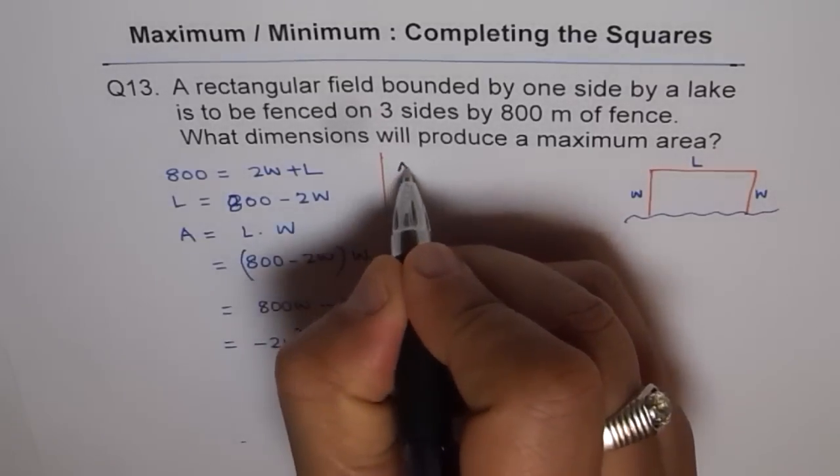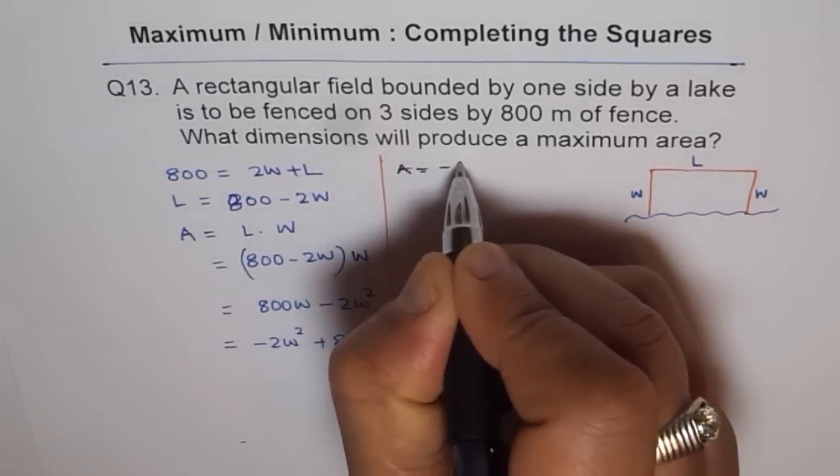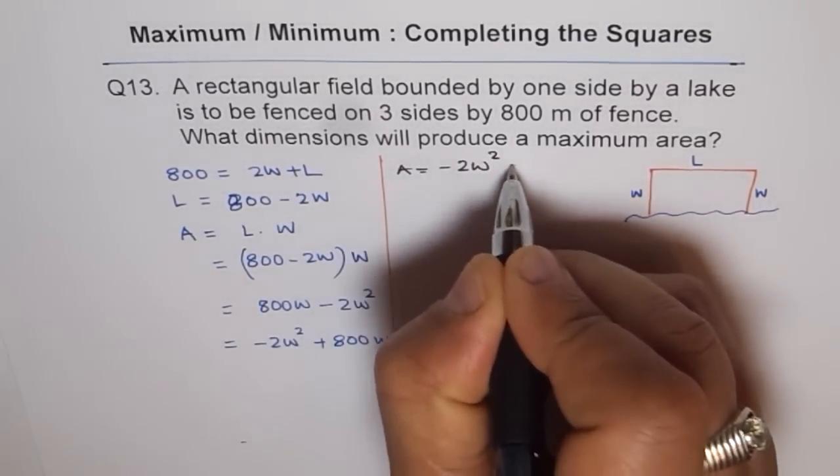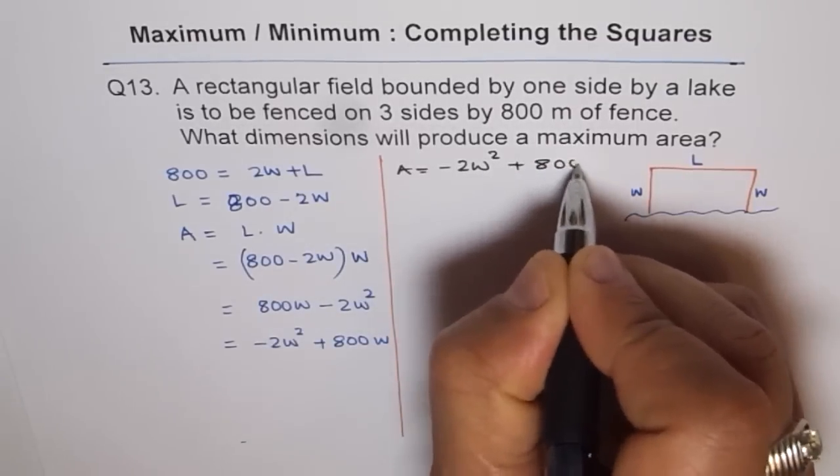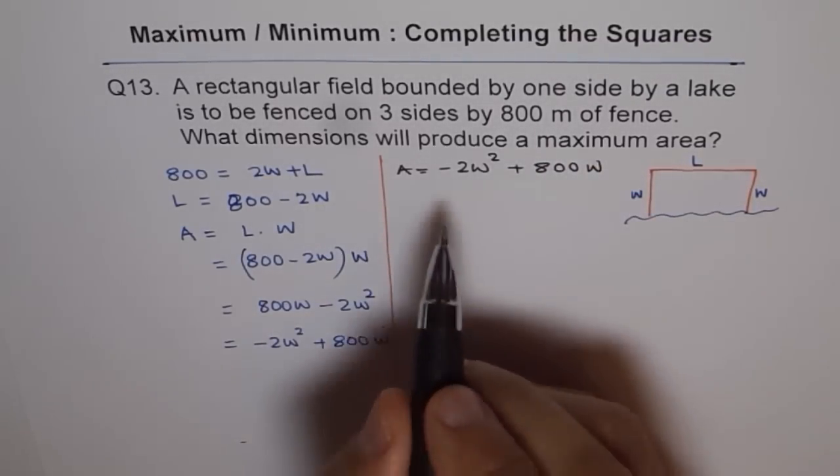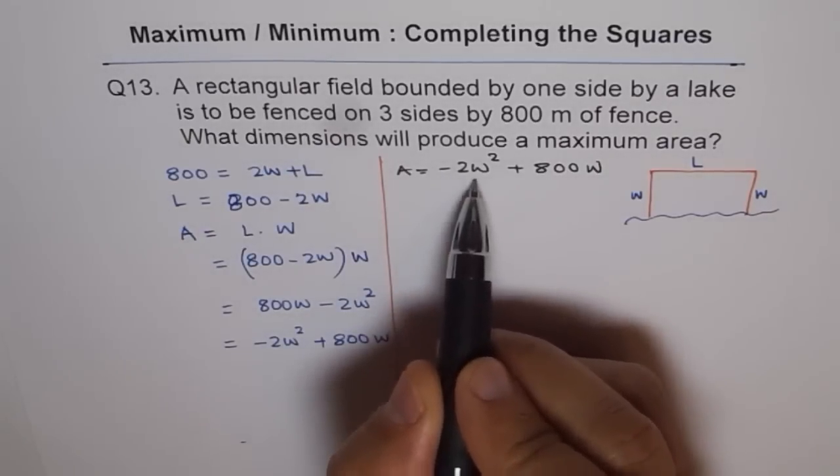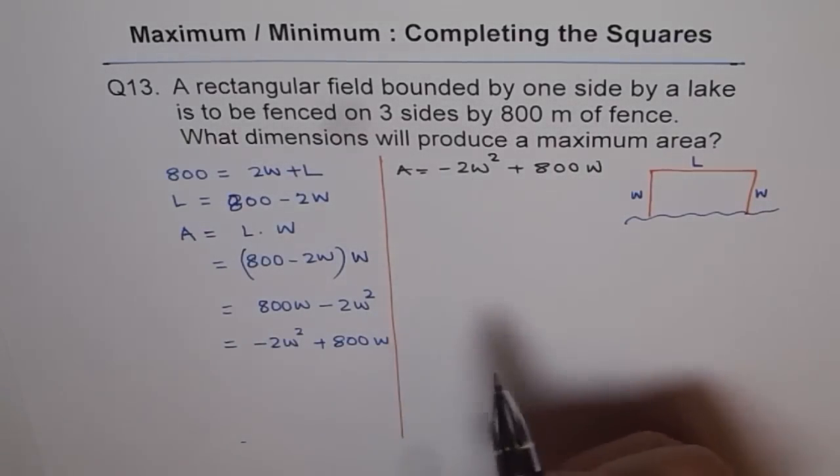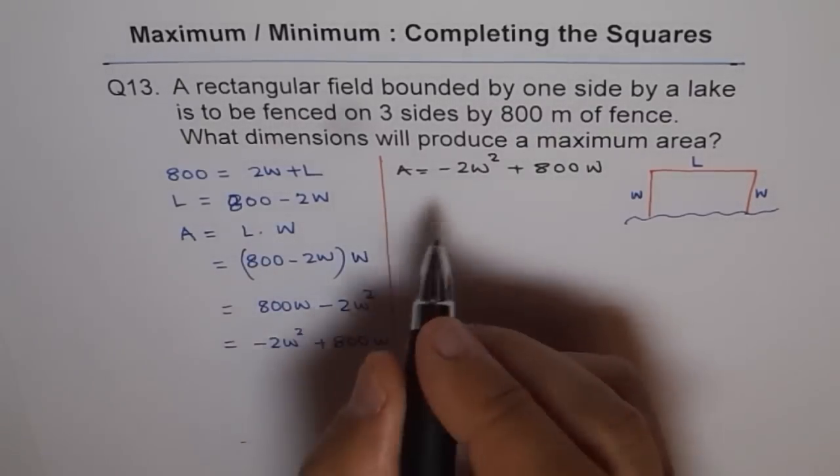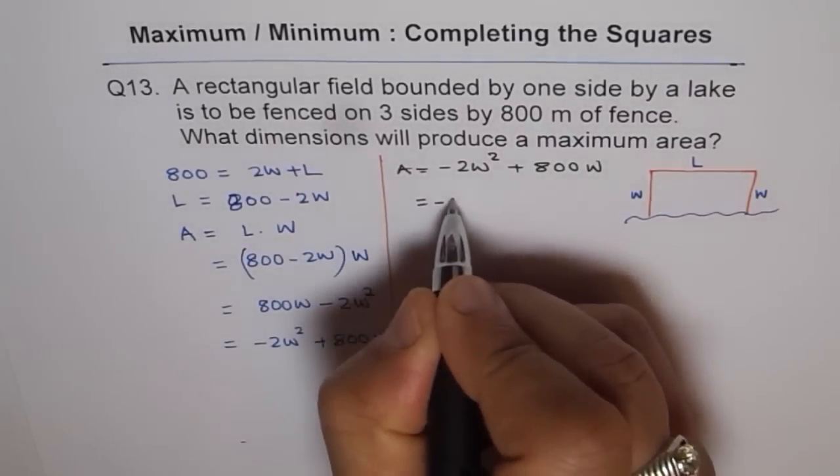A equals to minus 2W square plus 800W. That is our equation. First step is, always factor out the leading coefficient between the first two terms only. Here we have only two terms, so between these terms. So we get minus 2, that's factored out.